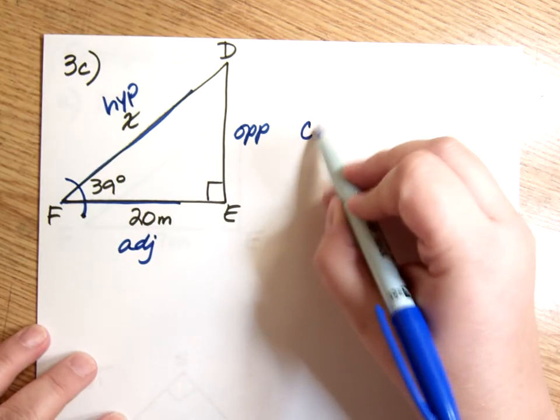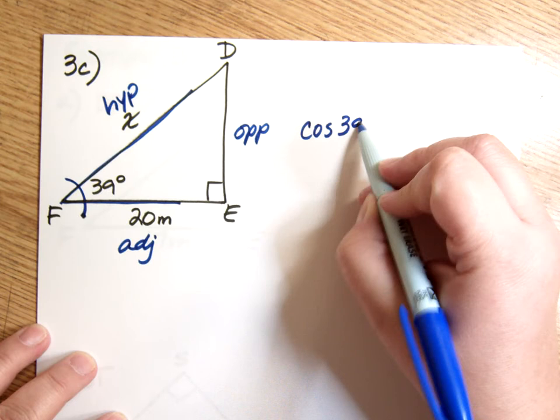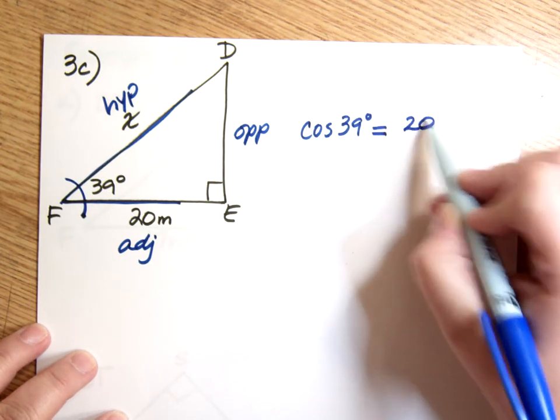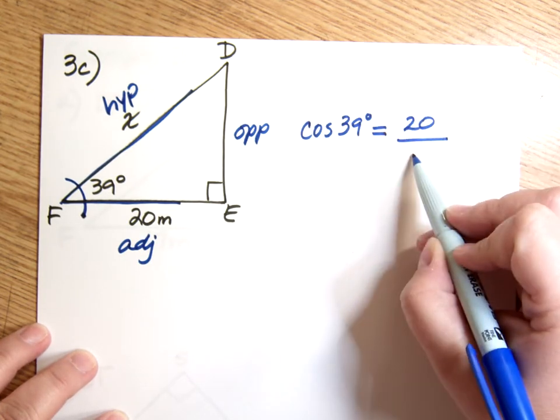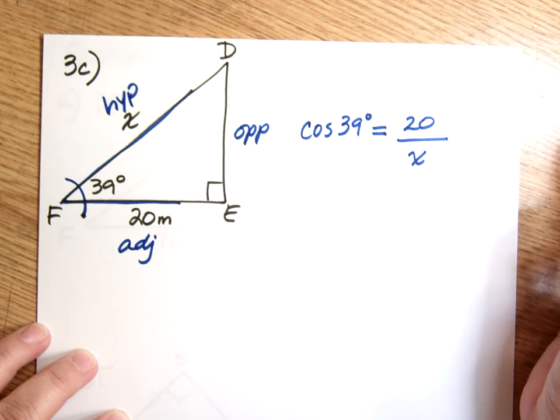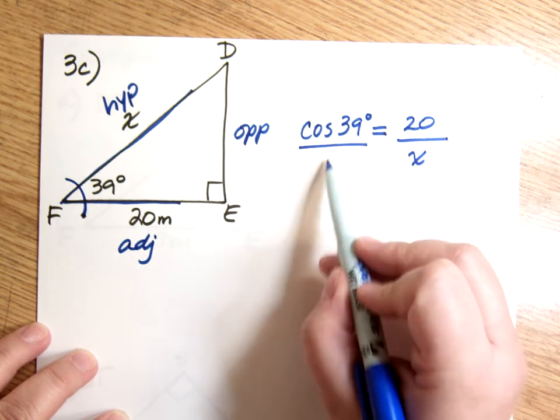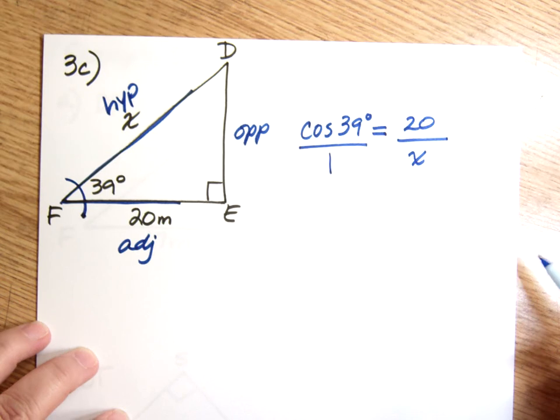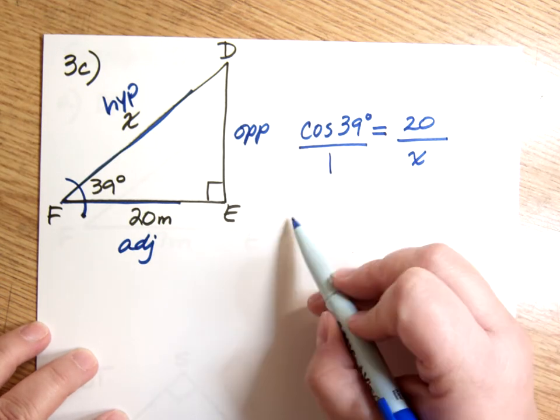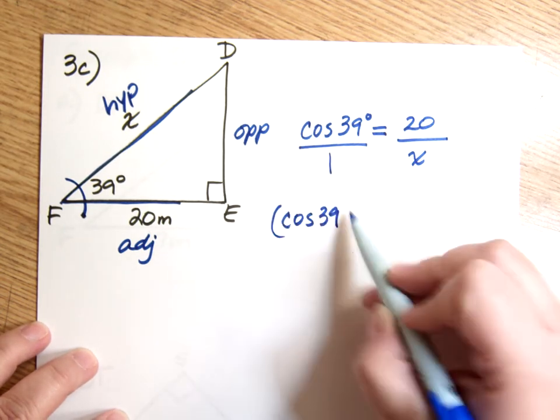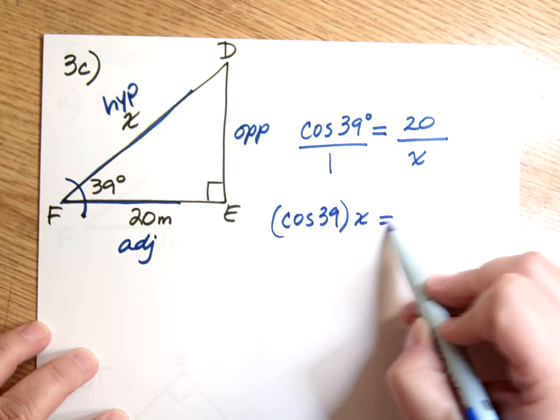So I say cosine of 39 degrees equals, and then I put adjacent, which in this case is 20, over hypotenuse, which in this case is my X. And now I'm going to go ahead and put this over 1, so that it's a proportion, and I'm going to cross multiply it.